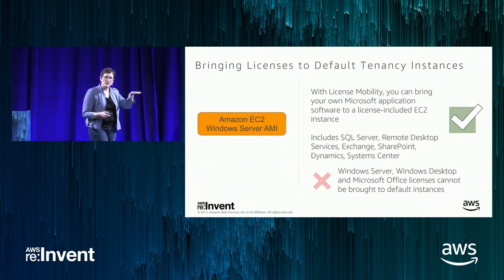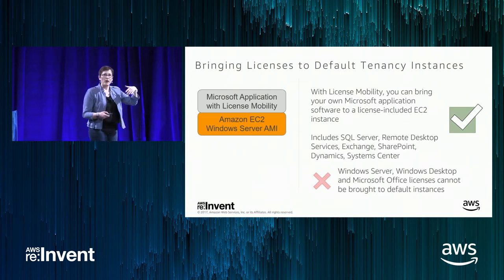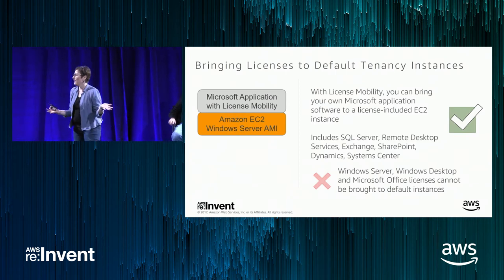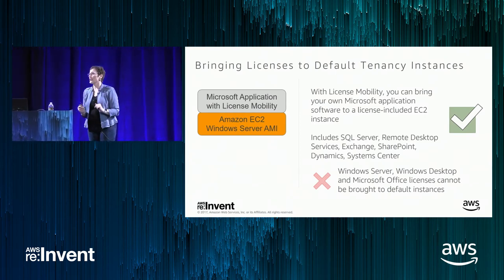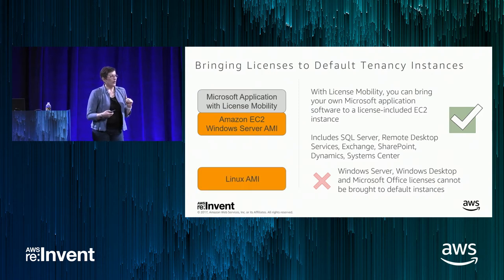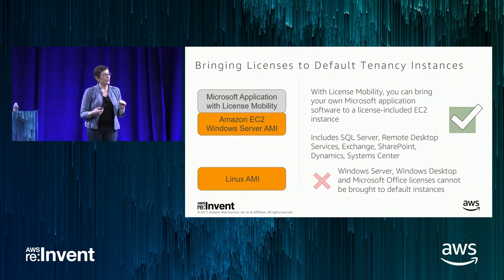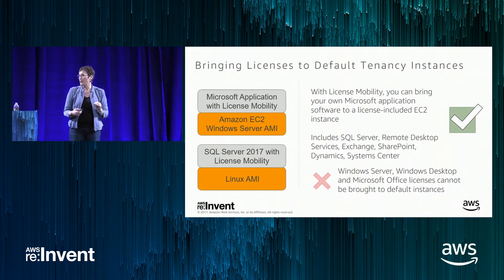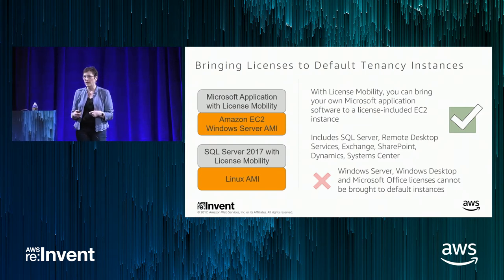You're going to start with a license-included instance, then bring in your own Microsoft application software. The number one case we see is SQL Server, but anything with license mobility applies. For SQL Server 2017 on Linux, you can either start with an AWS AMI or use your own Linux AMI and bring SQL Server 2017 as long as you have that license mobility benefit — you can bring it to that multi-tenant infrastructure.